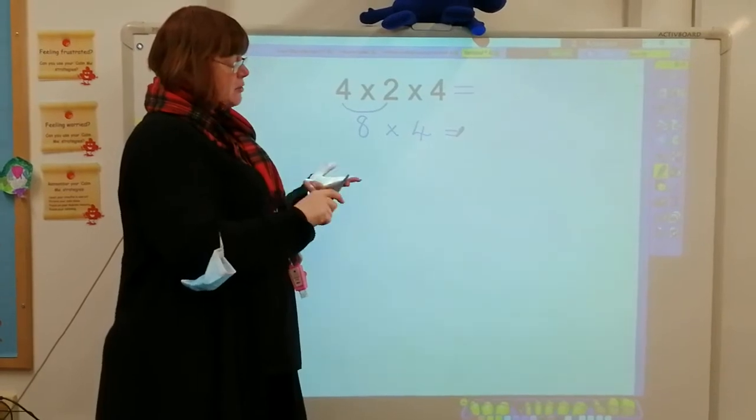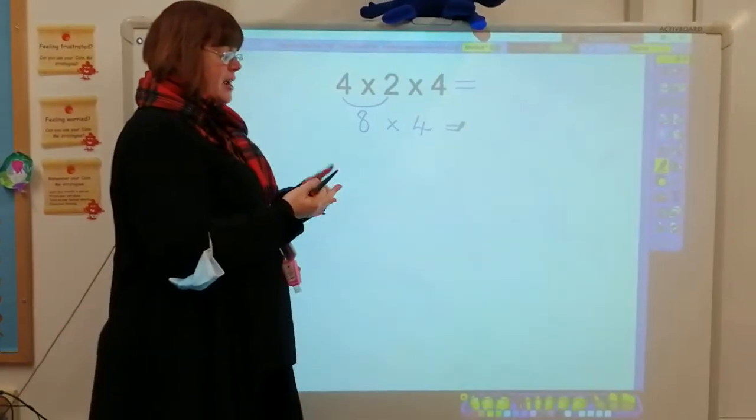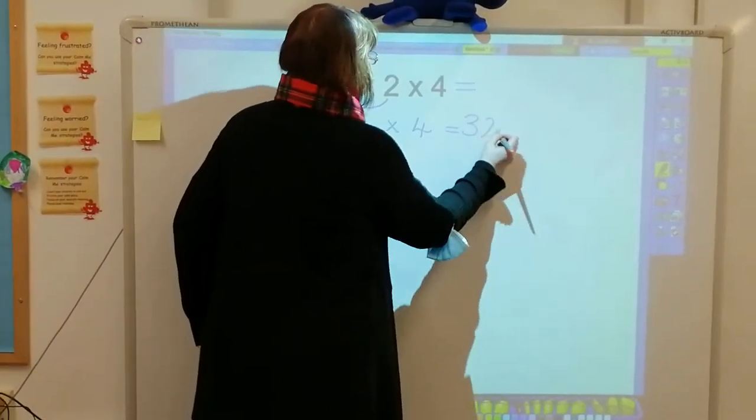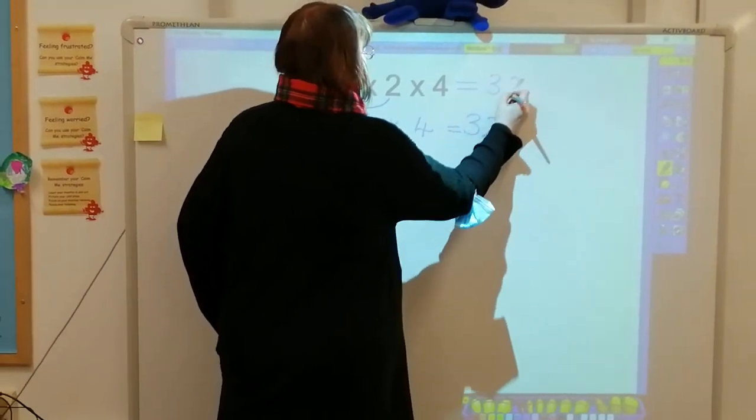So we've got 4, 8, 12, 16, 20, 24, 28, 32. So our answer is 32. So 4 times 2 times 4 is 32.